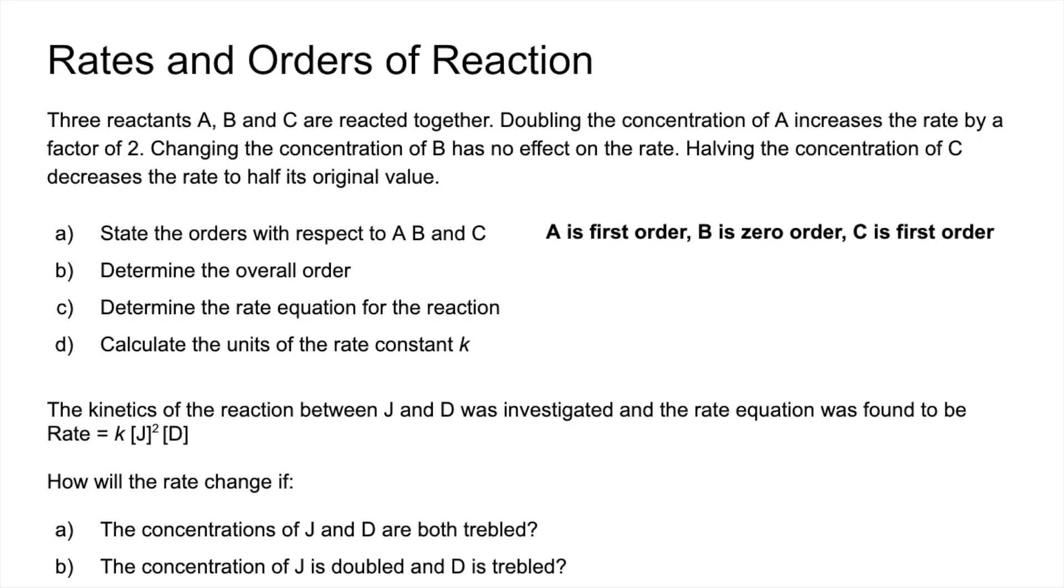The overall order is just the sum of the orders, so that's second order overall. The rate equation, so basically we just lose the B term because it's zero order. You don't need the multiplied sign in it, you just put the square brackets side by side. And I haven't bothered with the power 1s, but you could put them in if you wanted to.